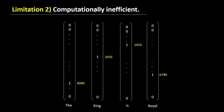Another limitation is that it is computationally inefficient because every word vector is of size 10,000. Thus, a sentence consisting of four words will be a matrix of size 4×10,000, which is a huge matrix. And if our vocabulary is of size 100,000 instead of 10,000, then this vector will be of size 4×100,000, which is really large.